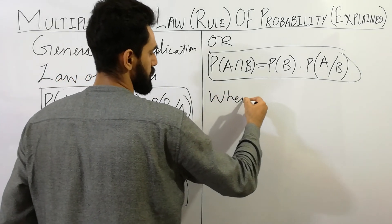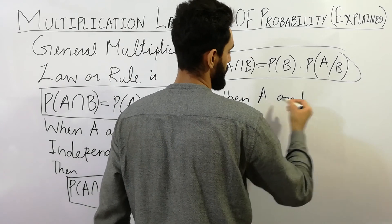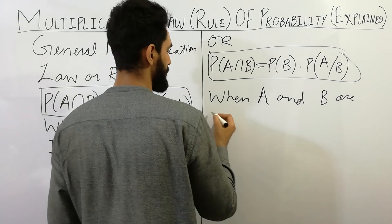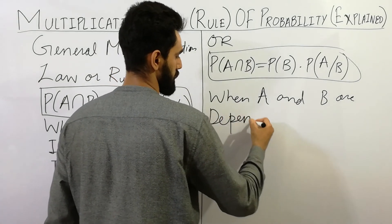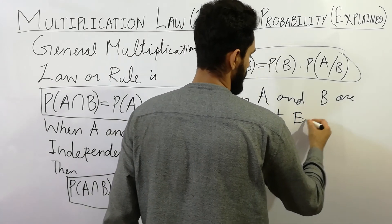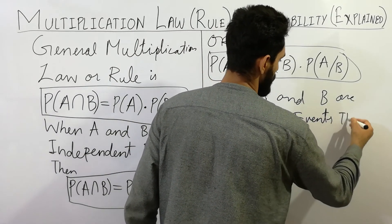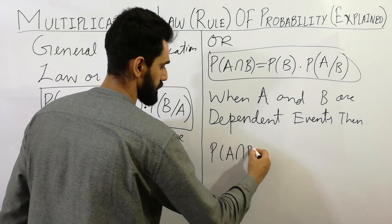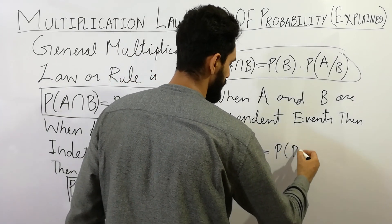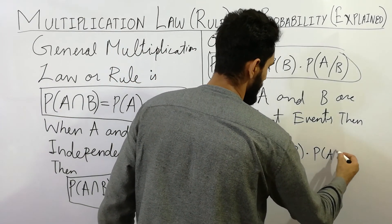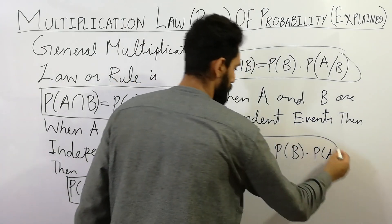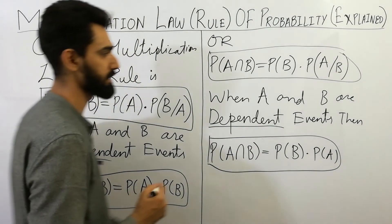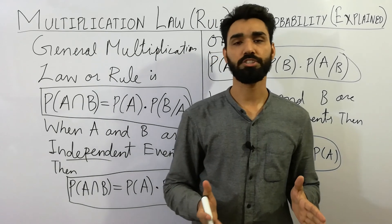When A and B are dependent events, then the probability of A intersection B is equal to probability of B multiplied by probability of A. This formula is used also in dependent events.